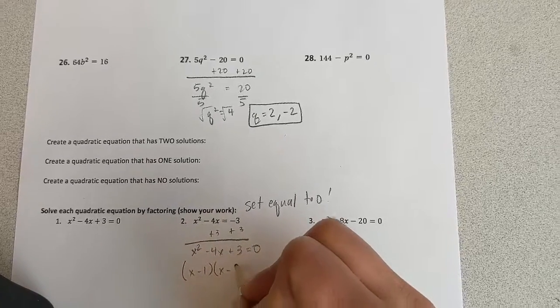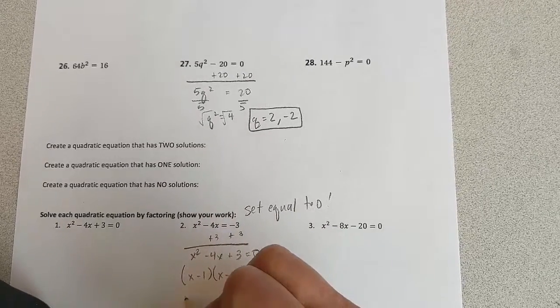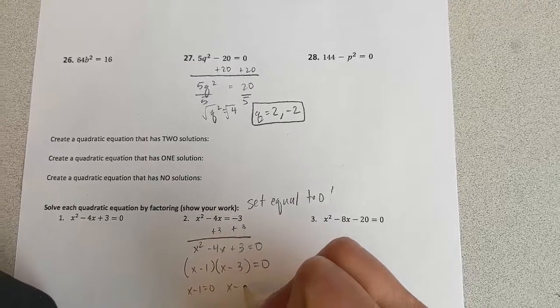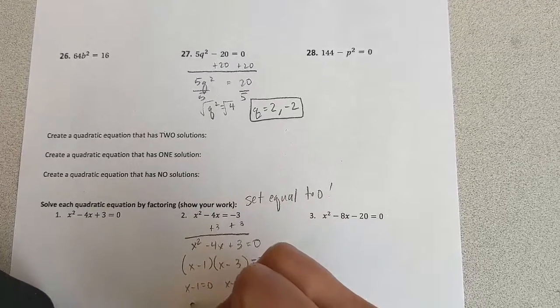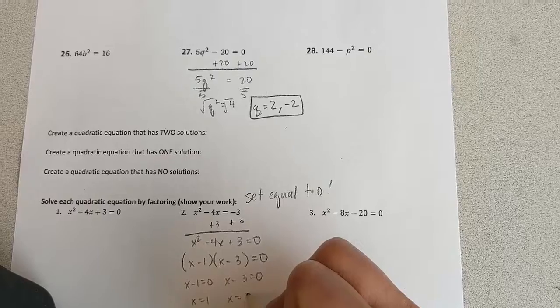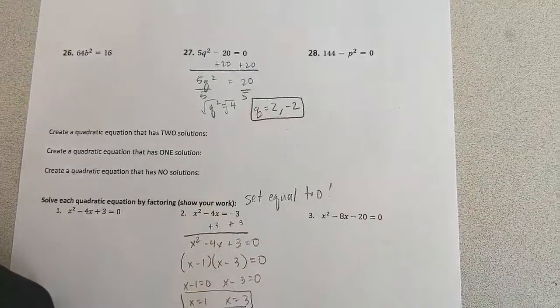That's going to factor as x minus 1 times x minus 3, and then you've got x minus 1 equals 0, or x minus 3 equals 0, so you've got x equals 1 and x equals 3. The rest, I think you can handle on your own.